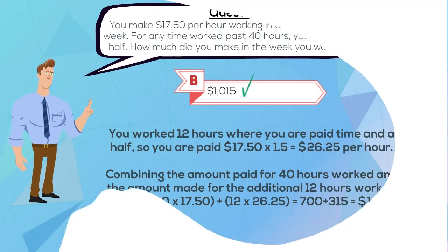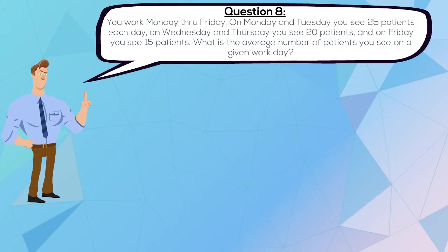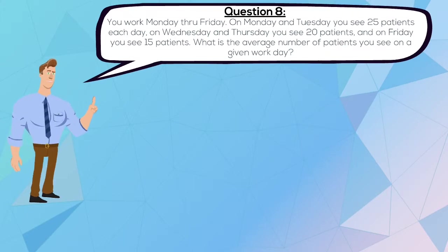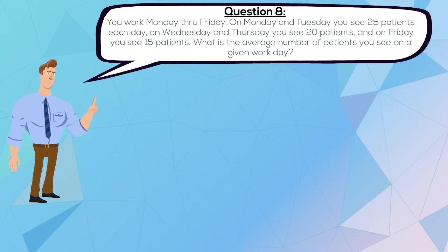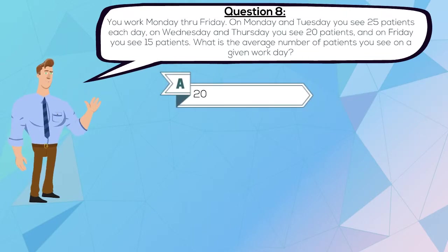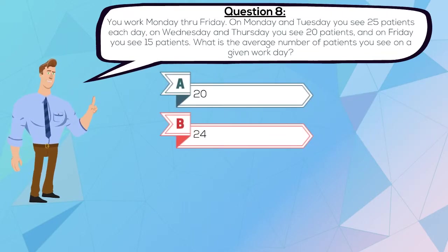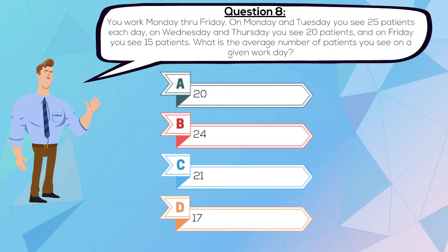Question 8. You work Monday through Friday. On Monday and Tuesday you see 25 patients each day, on Wednesday and Thursday you see 20 patients, and on Friday you see 15 patients. What is the average number of patients you see on a given work day? A. 20, B. 24, C. 21, or D. 17.